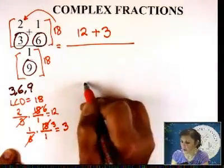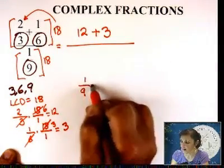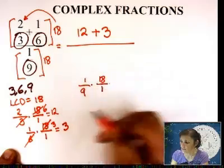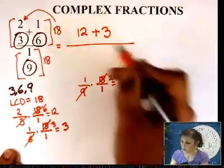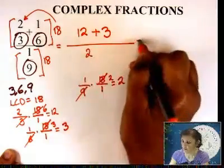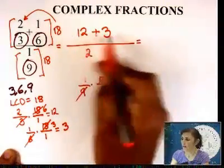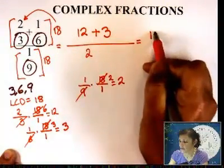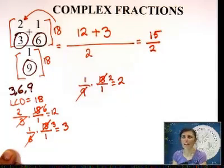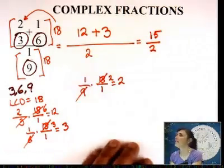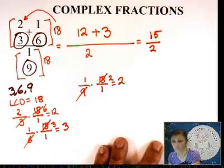How about at the bottom? I have 1 ninth times 18 over 1. These two will go. So you're going to have a 2. So you have a 2. At the top, 12 plus 3, 15 over 2. And you're done. If there is something to simplify at this point, you go ahead and simplify.